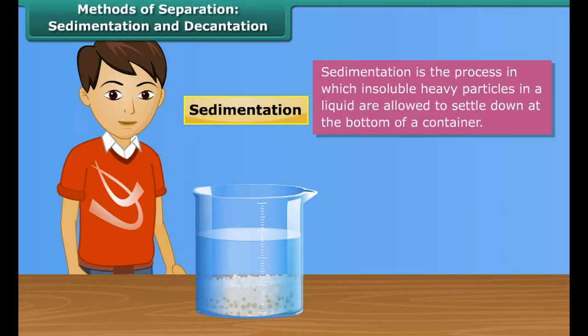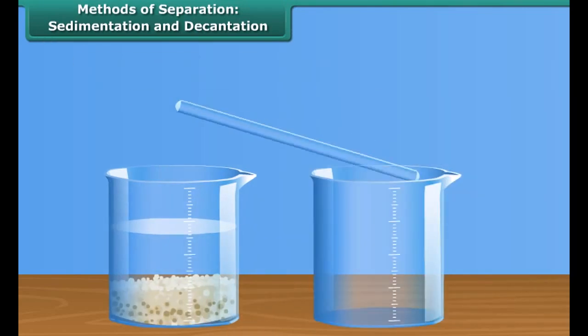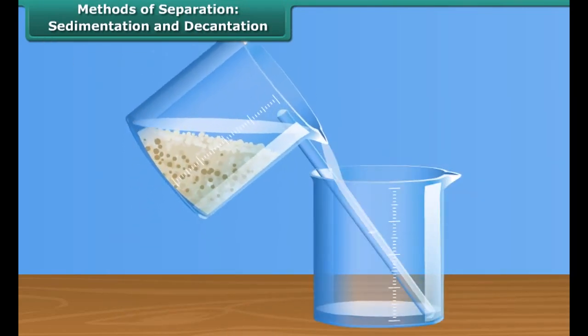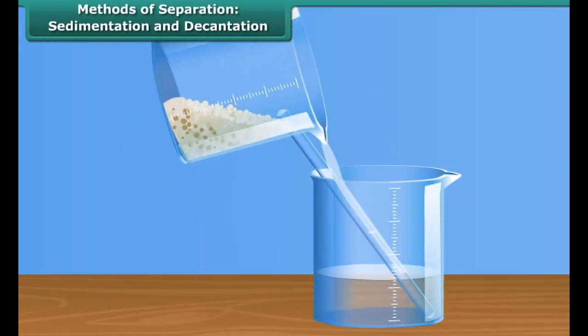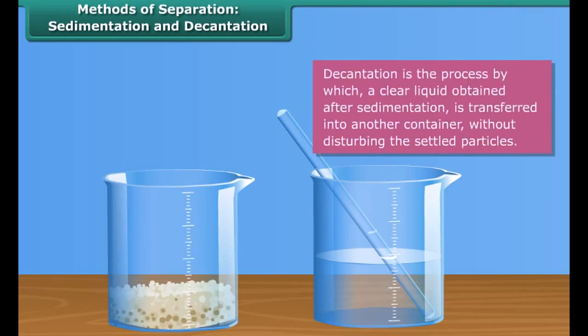The beaker had clear water. Mud being heavy had settled down at the bottom of the beaker, while the water formed the upper layer. This process of deposition of mud at the bottom of the beaker is called sedimentation, and the layer of mud is called the sediment.